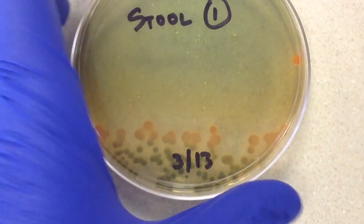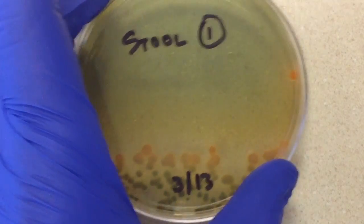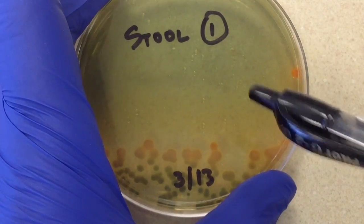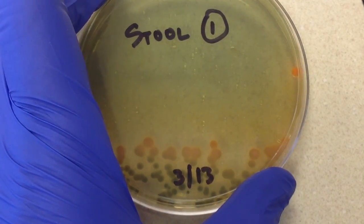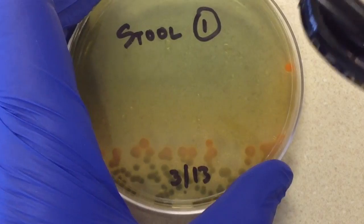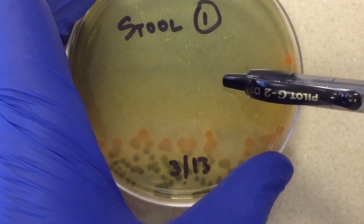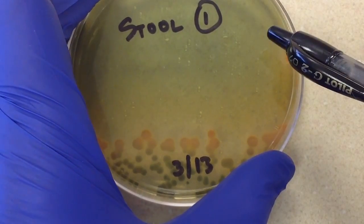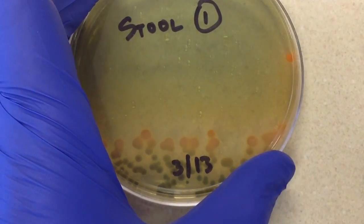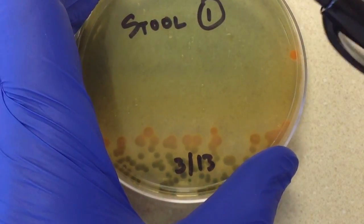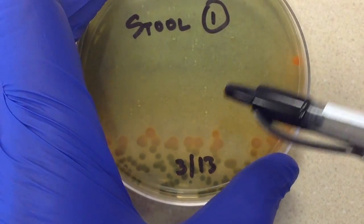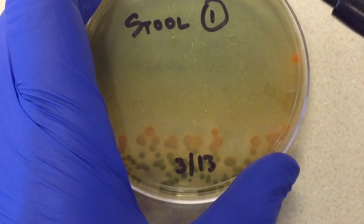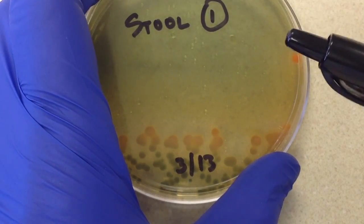Let's take a look at our hectone enteric or HE plate. This is also a selective differential plate. McConkey's is selective for gram negative, and this is as well. But this one is even more selective. This one is meant to get rid of the more coliform gram negative rods and allow Salmonella and Shigella to grow.